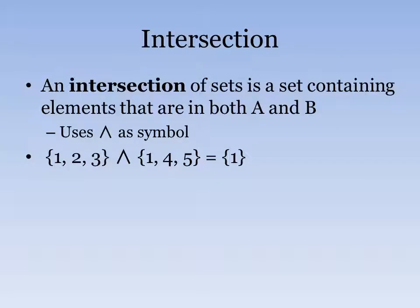Okay, we also have an intersection. And an intersection is just a set containing elements that are both in A and B. It also looks like an upside-down V. So if there's a set that's 1, 2, 3, and a set that's 1, 4, 5, the only thing that they have in common is 1. So the intersection between those is just 1.